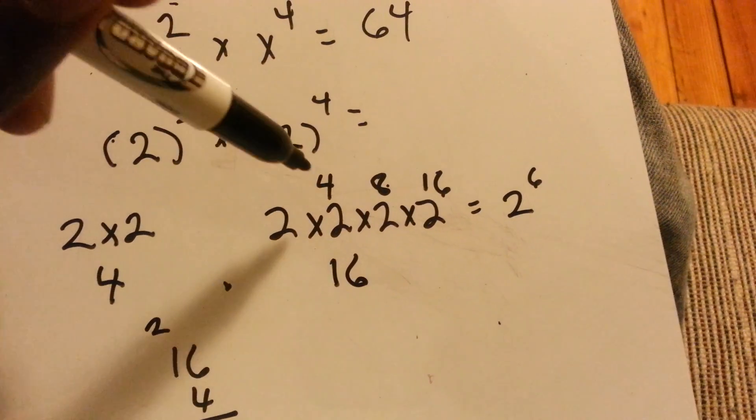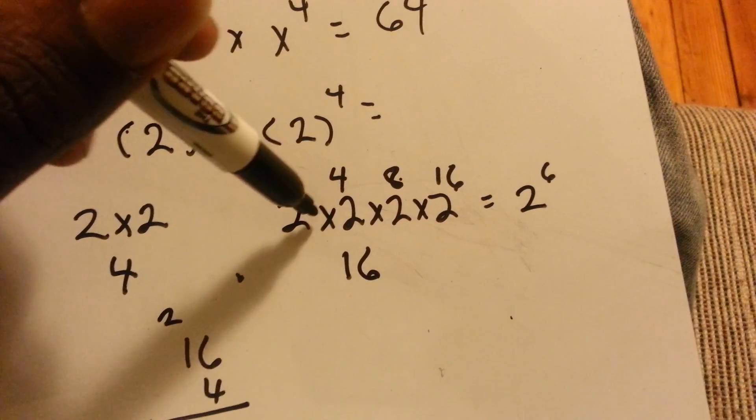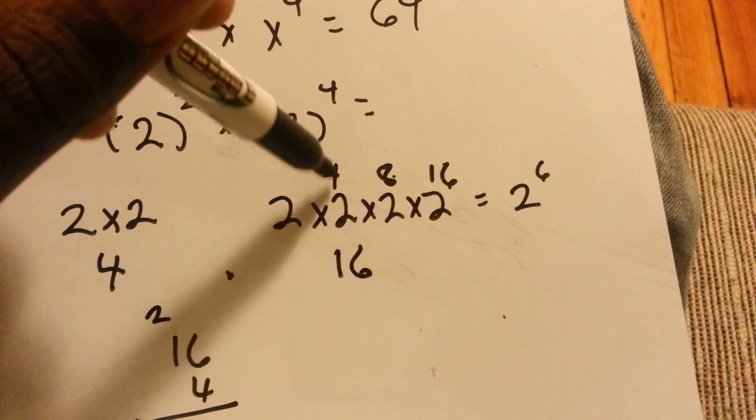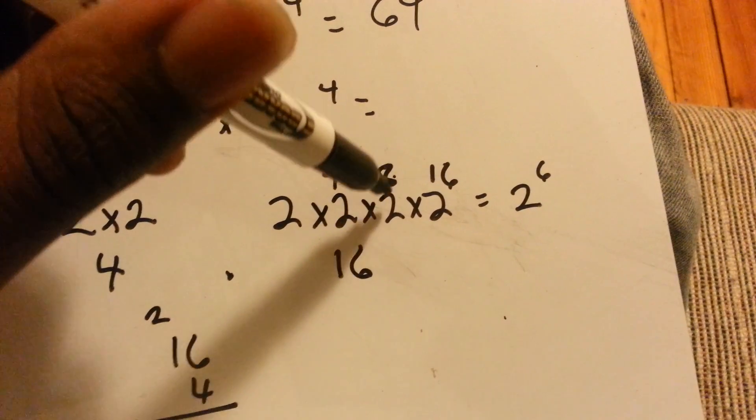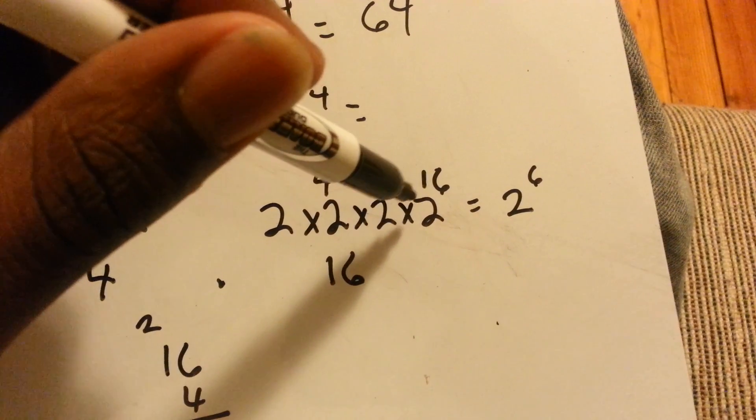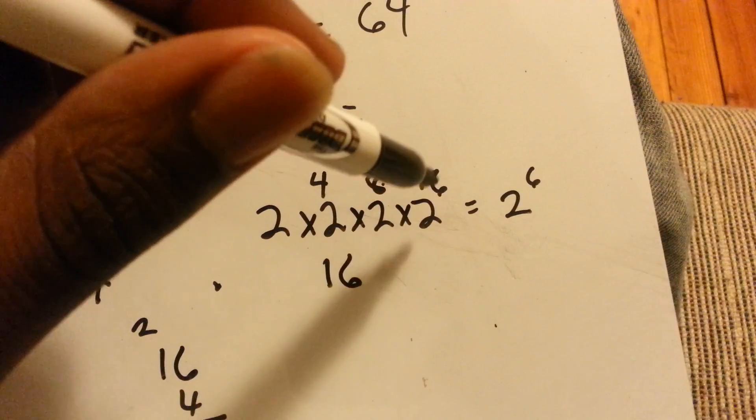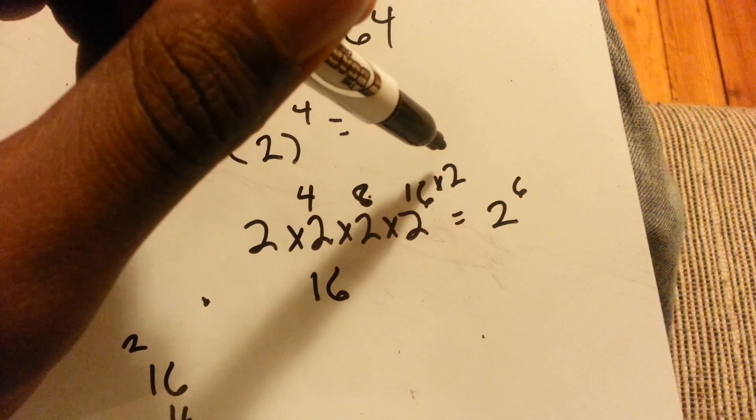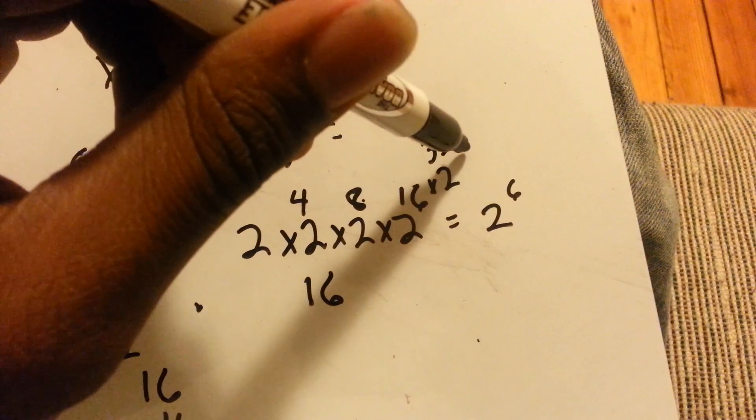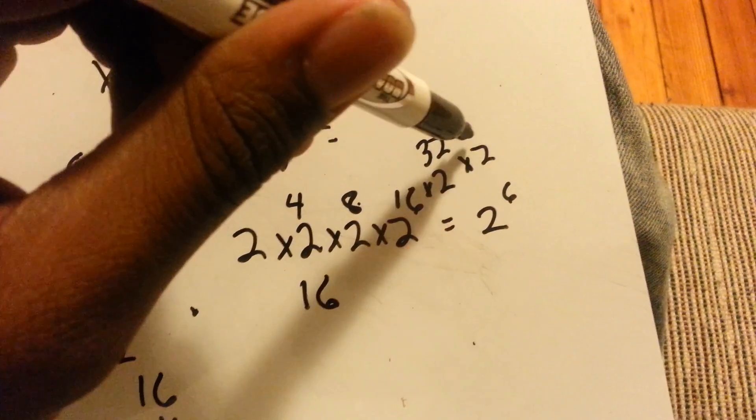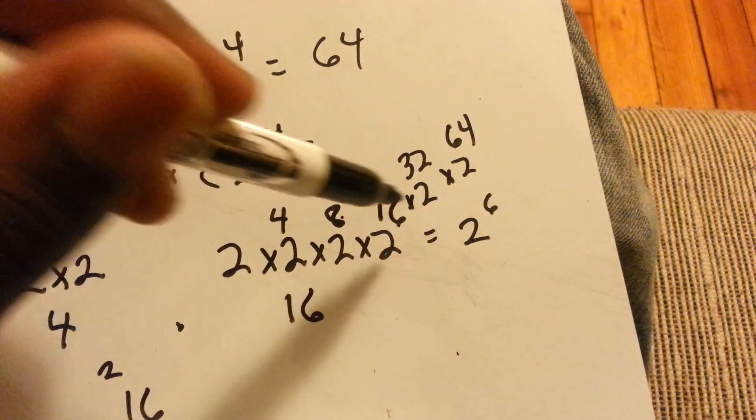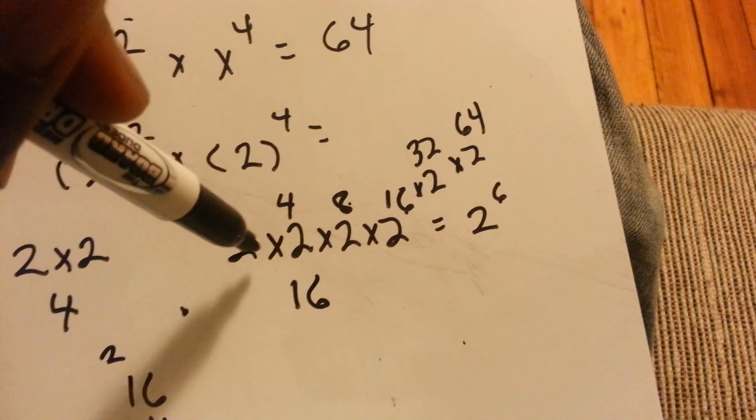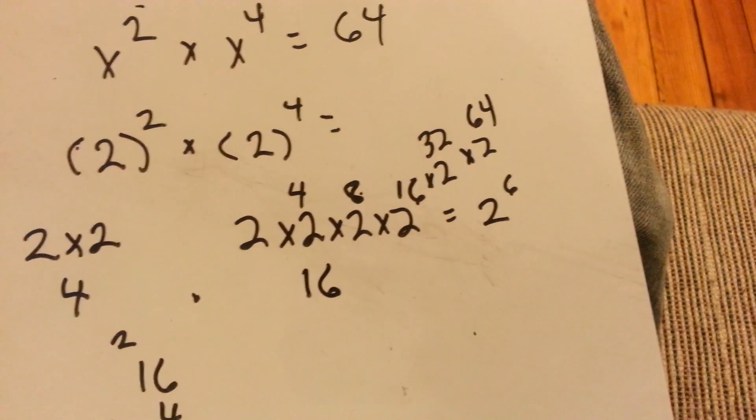Another way is two times two equals four, four times two equals eight, eight times two equals 16, 16 times two equals 32, and 32 times two equals 64. So you see that's six bases, six x's, six twos.